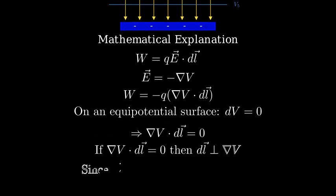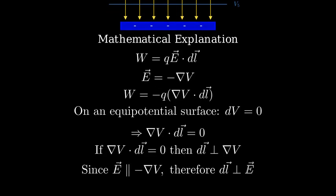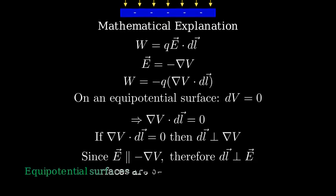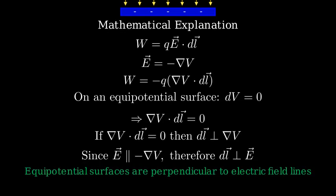Since gradient of V is parallel to E, and gradient of V dot dL equals zero, dL must be perpendicular to gradient of V, and therefore perpendicular to E. This proves mathematically what we observed visually: equipotential surfaces are always perpendicular to electric field lines.